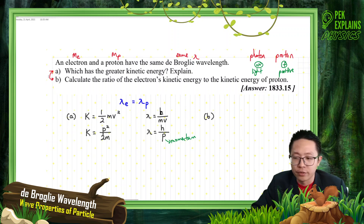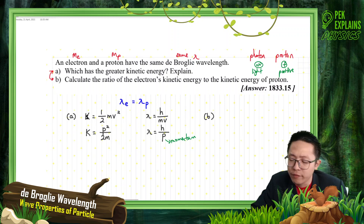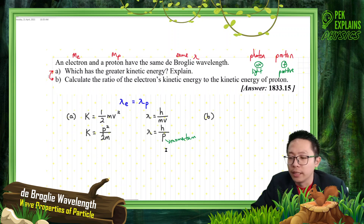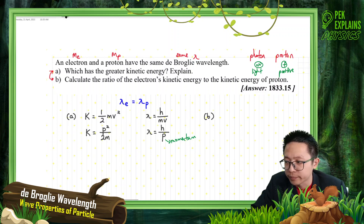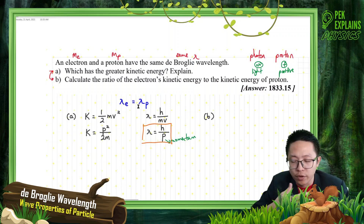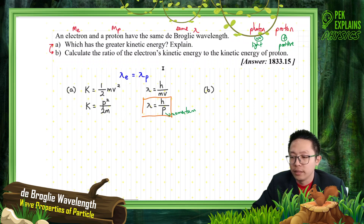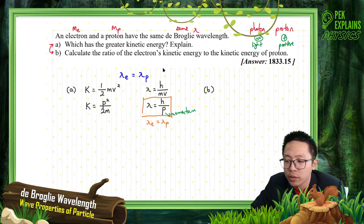So I treat question A like question B. Now, the kinetic energy formula is half mv squared, and the De Broglie wavelength formula is lambda equals h over p. They have the same wavelength. If lambda is equal for both electron and proton, and lambda equals h over momentum where h is a constant, then same wavelength means they will have the same momentum.